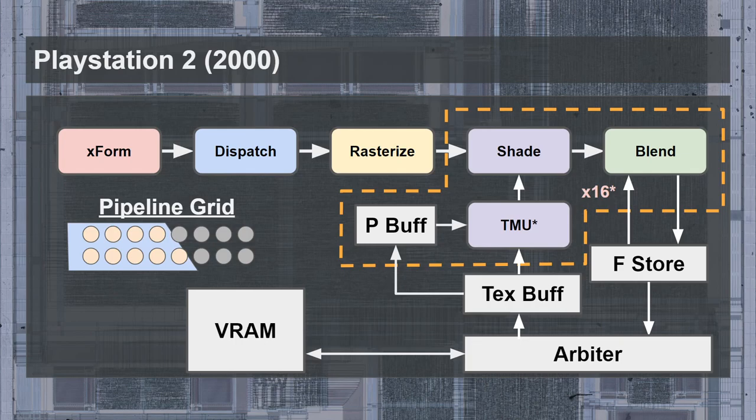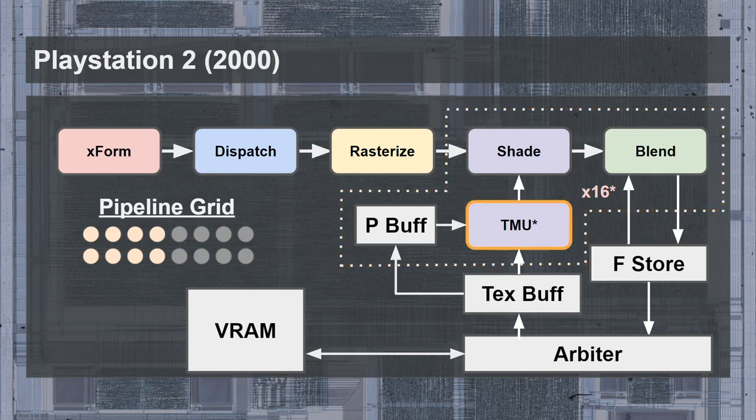There was one exception to this: when rendering triangles with textures, half of the pipelines could not be used, cutting the fill rate in half and only allowing two rows of 4 pixels to render simultaneously. This comes down to the texture mapping unit — texture mapping is done within the 16 pipeline blocks, but every two pipelines effectively shared a single TMU.